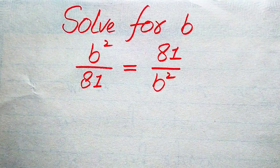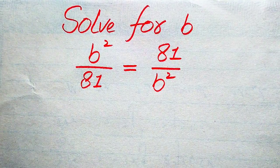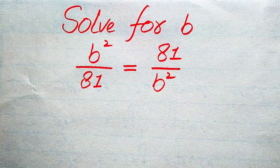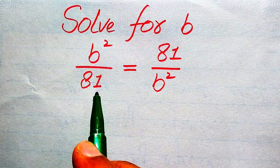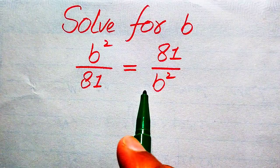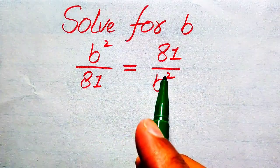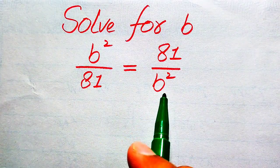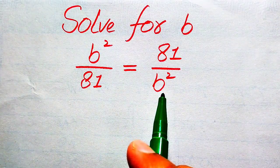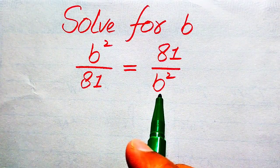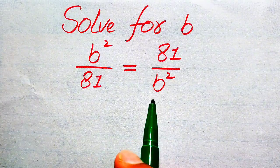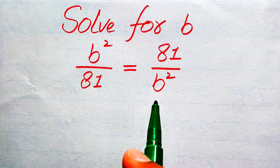Hello everyone. How to solve this problem for the values of b, if we have b² divided by 81 equals to 81 divided by b²? We solve this problem for all the values of b.